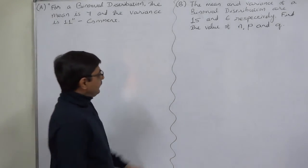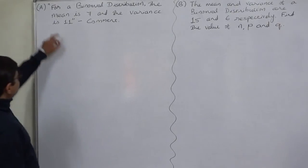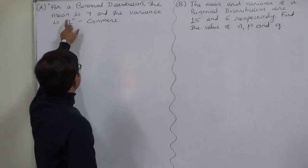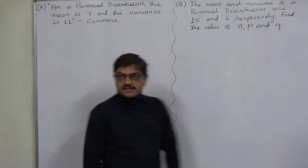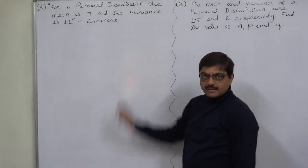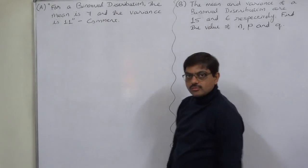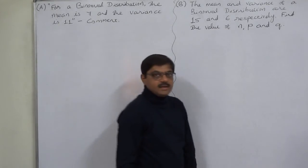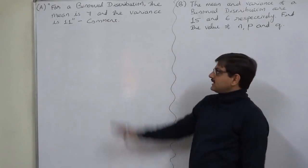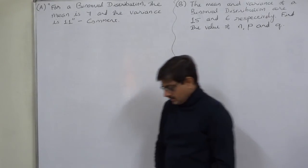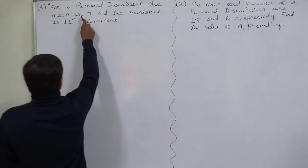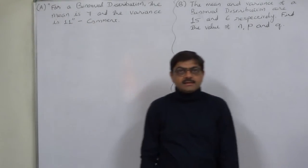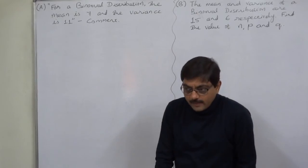Let us take the first one. The question given is: for a binomial distribution, the mean is 7 and variance is 11. Comment. We just have to give our comment about this statement. That means we require to check whether this statement is true or not.